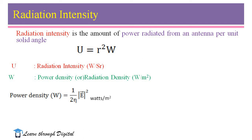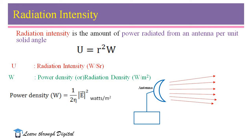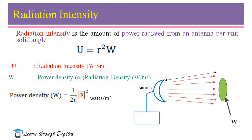The unit for power density is watts per meter square. If we know the power density, from this we can calculate the radiation intensity. The power density W is calculated with the help of the Poynting vector, which is equal to 1 divided by 2 eta, multiplied by E squared — the magnitude of electric field intensity.